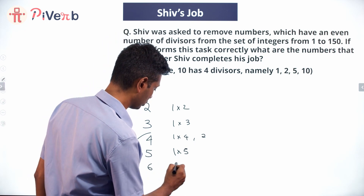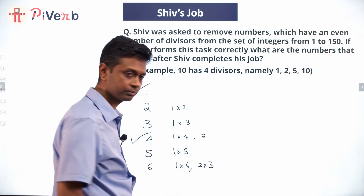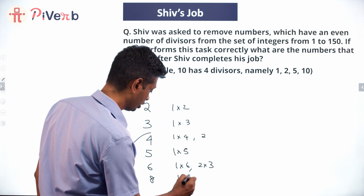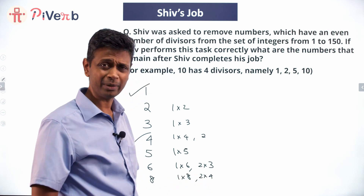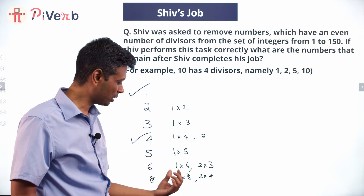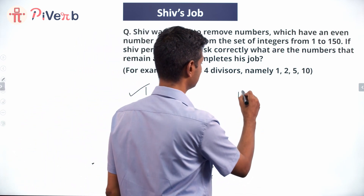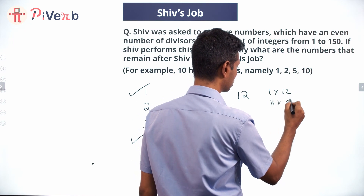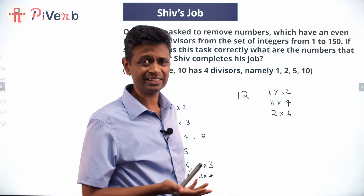Six: factors are 1×6 and 2×3, giving four factors. Eight: 1×8 and 2×4, giving four factors — deliberately writing these in pairs. For 12: 1×12, 3×4, and 2×6, giving six factors. Whenever you write factors, you get them in pairs.